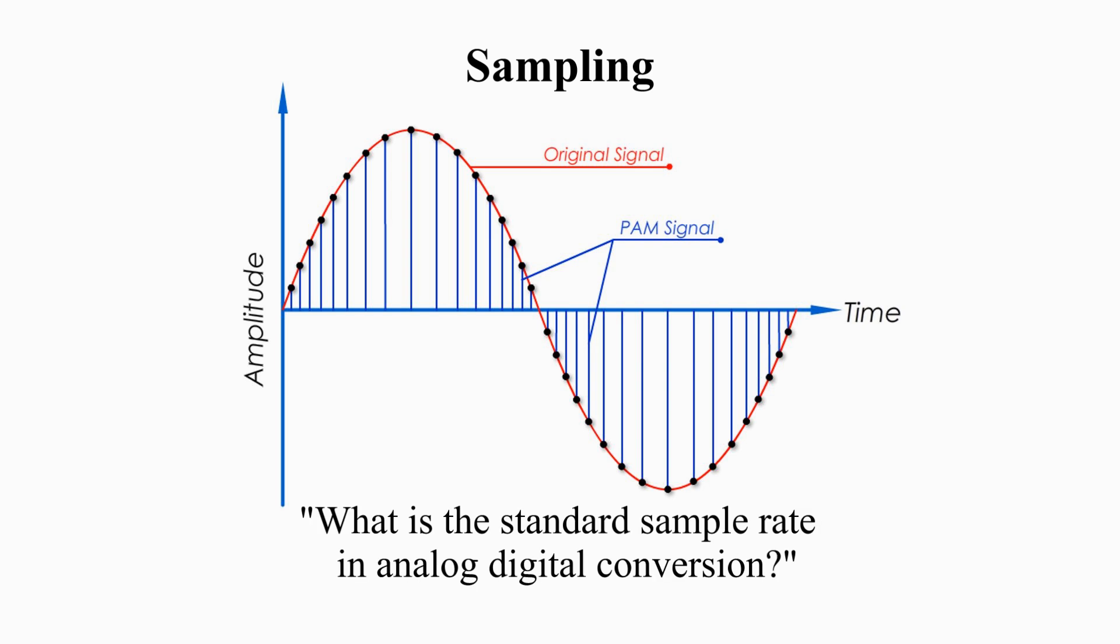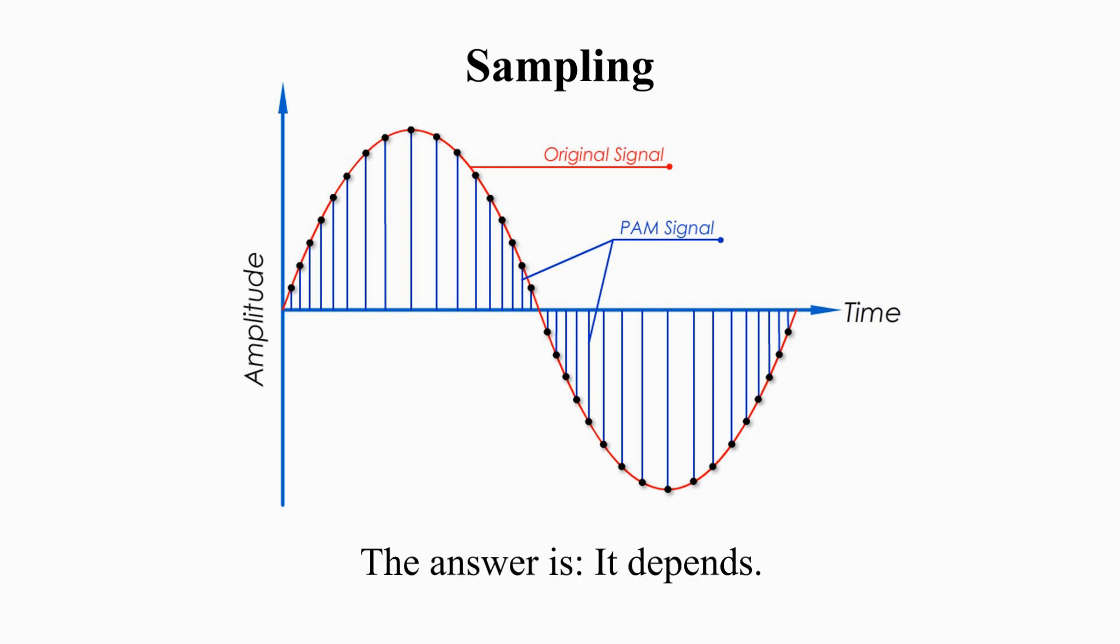You may ask, what's the standard sample rate in analog to digital conversion? Great question. The answer is, it depends. For telephone, sample rate is 8 kHz, or 8,000 samples per second.